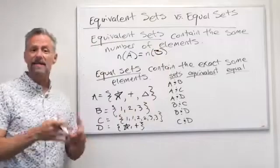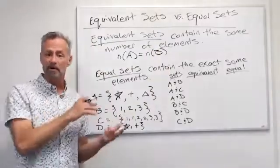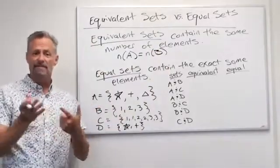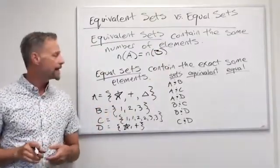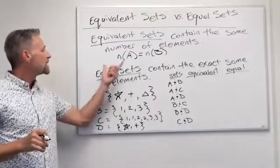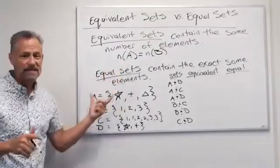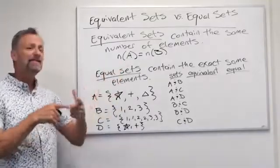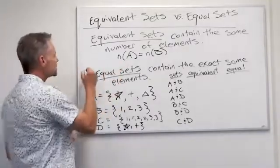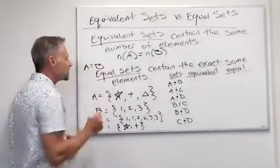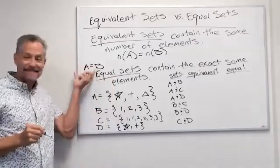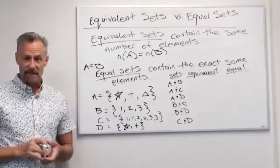Remember, that's from cardinality — they have the same number of elements. I have another video on cardinality if you want to watch that. Equal sets doesn't mean the numbers have to be the same, but it means A has to equal B. They are exactly the same sets.